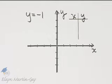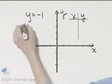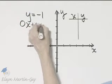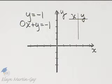Let's graph this linear equation in two variables. If it helps, you can think of it as 0x plus y is equal to negative 1, and there it is in standard form.